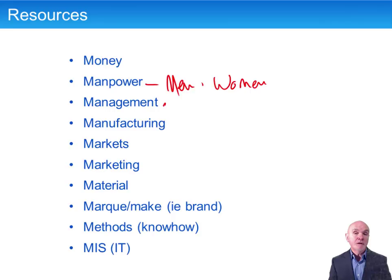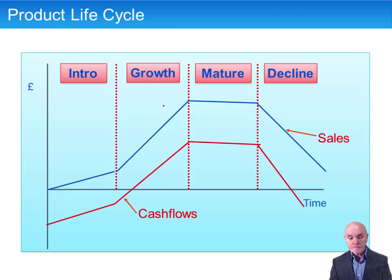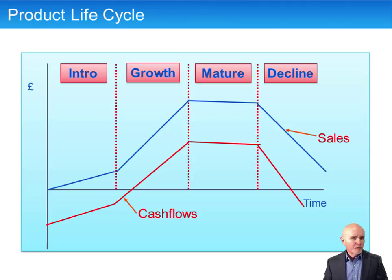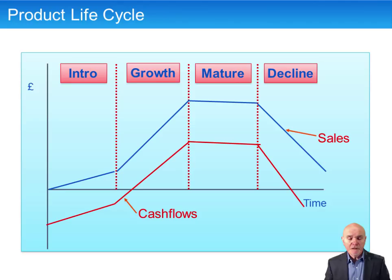The product lifecycle should be familiar from F5 and P3. Again, we want to see how it can be used to manage performance — what should we be looking for at each stage and what can we do to maximise performance? First, the introductory phase: new products being launched. There are three things that can happen — a rather poor performance, spot on target, or an exceptionally good performance.